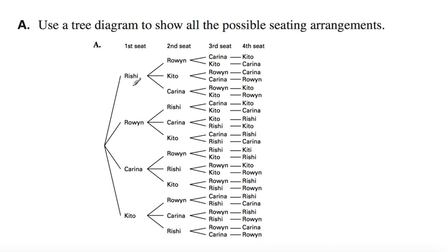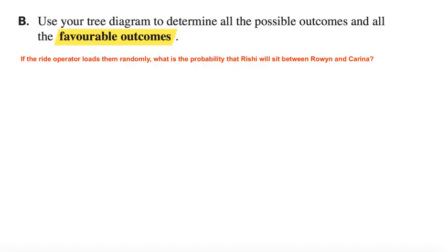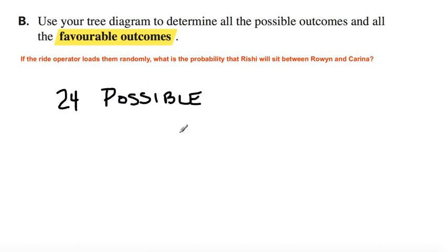It starts with Rishi, goes to Rowan and Karina, and shows all the possible outcomes of who sits where. There are the people, there are the seats, and there is who they can sit beside. This shows everybody in the first seat, second seat, third seat, or fourth seat — all the possibilities. So when you look at your data, use the tree diagram to determine all possible outcomes and all favorable outcomes. There are twenty-four possible outcomes.